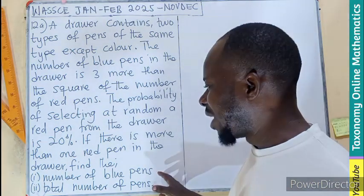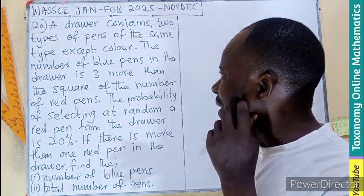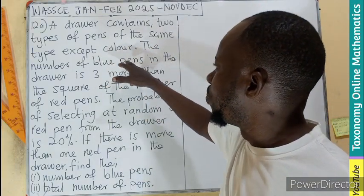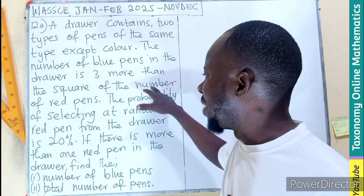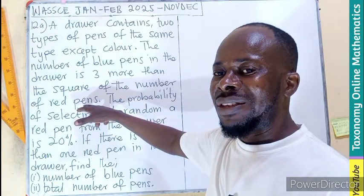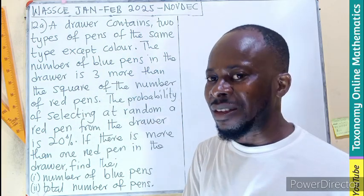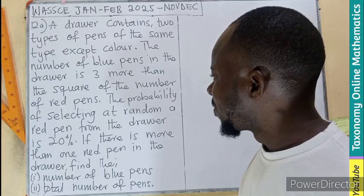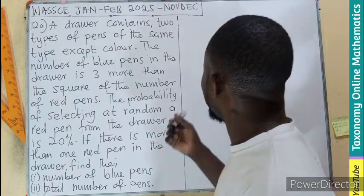If there is more than one red pen in the drawer, we are finding the number of blue pens and the total number of pens. Now, if we are saying that the number of blue pens in the drawer is three more than the square of that of the red, it means to know the number of blue pens, we need to know what the red pen is. So let's build on to what the red pen would be. Before then, see its probability.